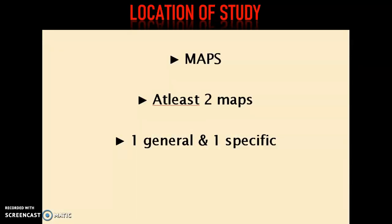Thirdly, we focus upon location of study, and location of study is associated with maps. Specifically, we are referring to two maps, or at least two maps. In most instances, we'll have a general map showcasing the main area. For example, we might have a map of Trinidad or a map of the entire country. The second map is a very specific map, very zoomed in.